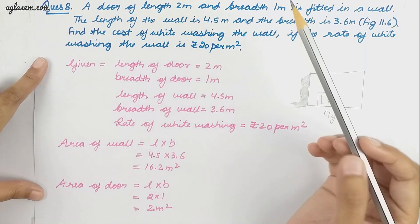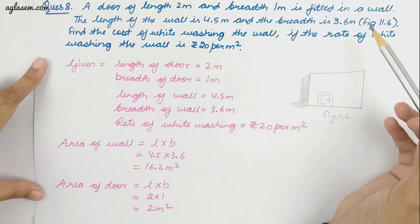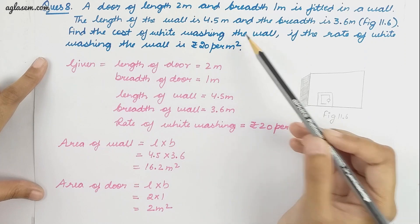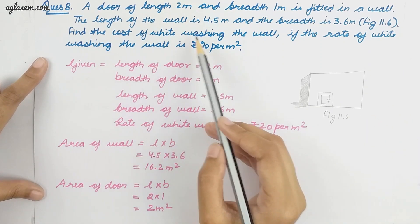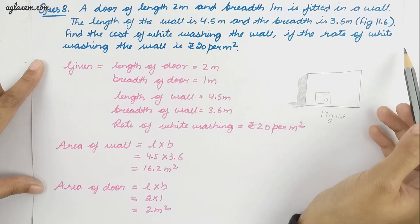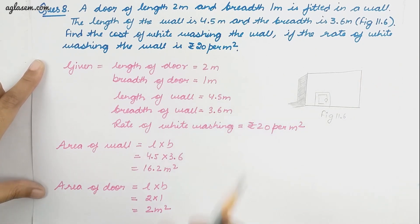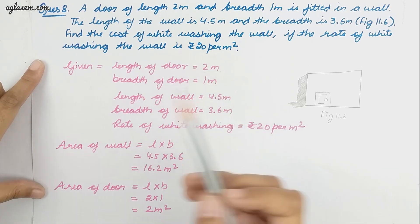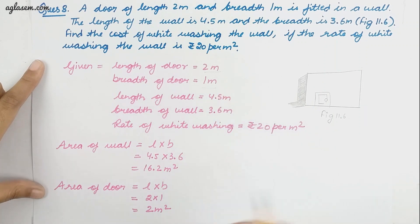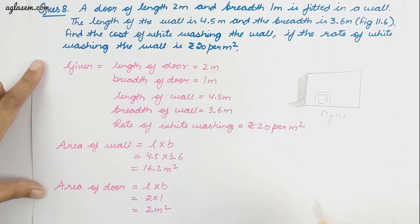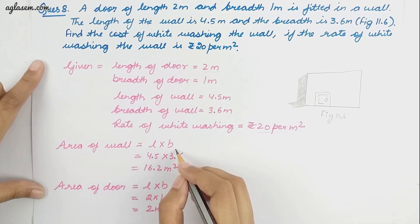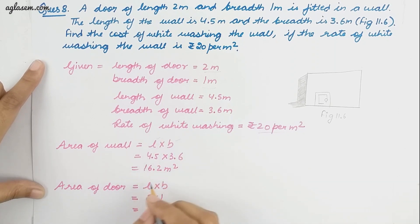Our next question: a door of length 2 meter and breadth 1 meter is fitted into a wall. The length of the wall is 4.5 meter and the breadth is 3.6 meter. Find the cost of whitewashing the wall if the rate is rupees 20 per meter square. The given values are: door length 2 meter, door breadth 1 meter, wall length 4.5 meter, wall breadth 3.6 meter. The area of the wall is 4.5 into 3.6 equals 16.2 meter square.